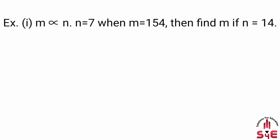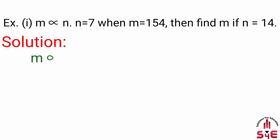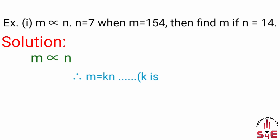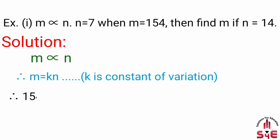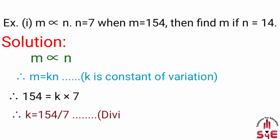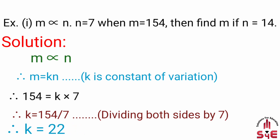Agar n is equal to 14 hai, tab aapko m find out karna hai. Solution: M is directly proportional to n, so m is equal to k into n, where k is the constant of variation. So 154 is equal to k into 7, so k is equal to 154 upon 7. After dividing by 7, we get k is equal to 22.